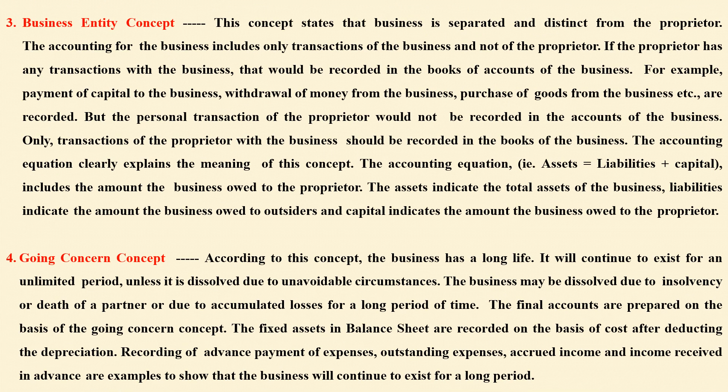The third one is business entity concept. According to this concept, business is different from the businessman for the purpose of accounting. Business treats the businessman differently. When a businessman invests money in the business, that would be written as capital account received from the businessman — meaning the business is liable to pay back to the owner. If he invested 10 lakh rupees, that amount will be written as capital.